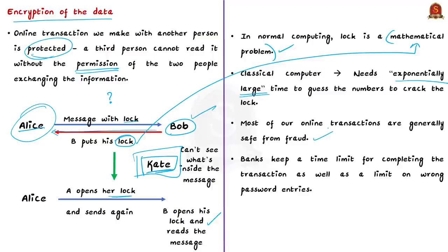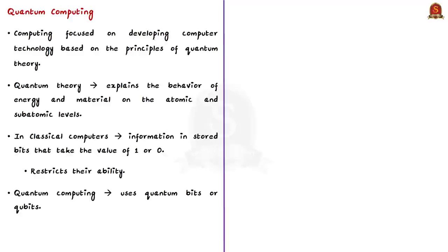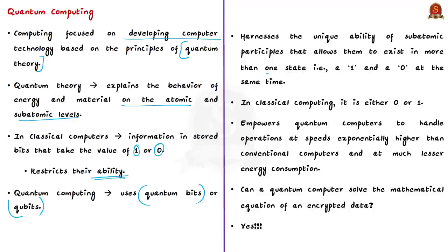To further protect transactions, banks keep a time limit for completing the transaction as well as a limit on wrong password entries. But with the advent of quantum computing, the realities are going to change. So what is quantum computing? Quantum computing is an area of computing focused on developing computer technology based on the principles of quantum theory. Quantum theory explains the behavior of energy and material on the atomic and subatomic levels. In classical computers, they can only encode information in bits that take the value of 1 or 0. This restricts their ability, but quantum computing uses quantum bits or qubits.